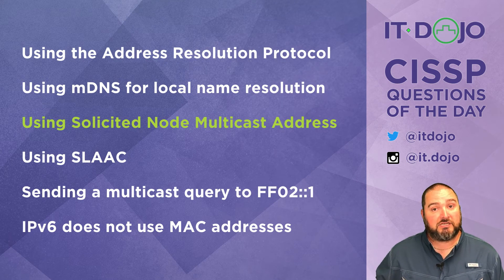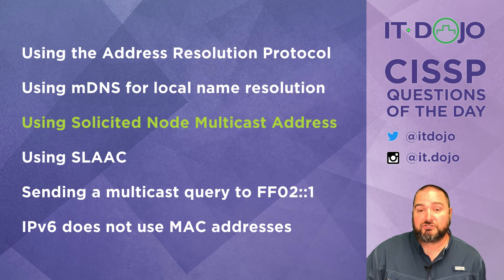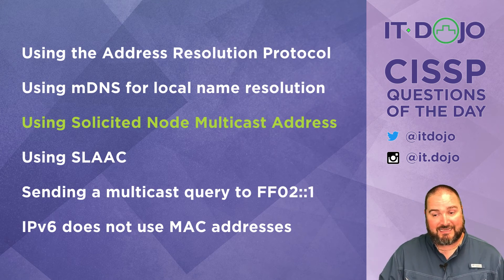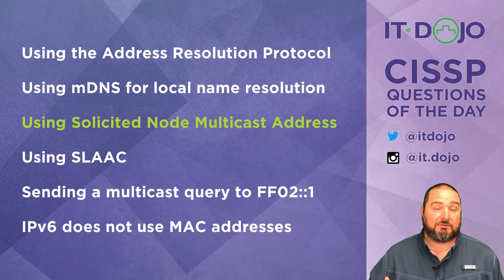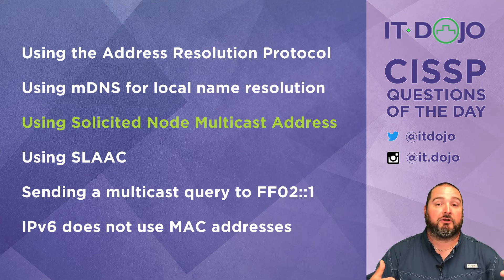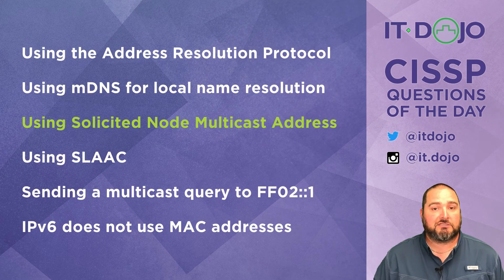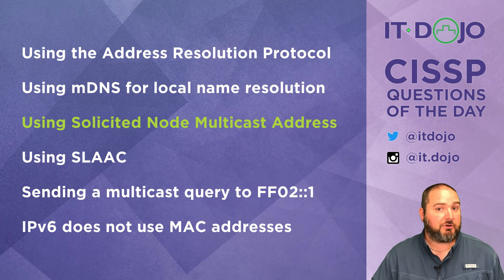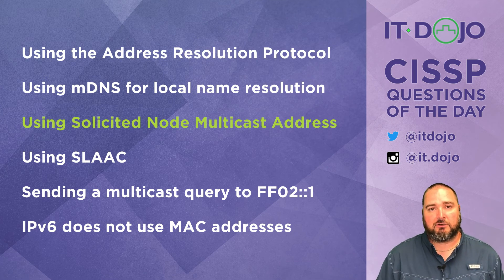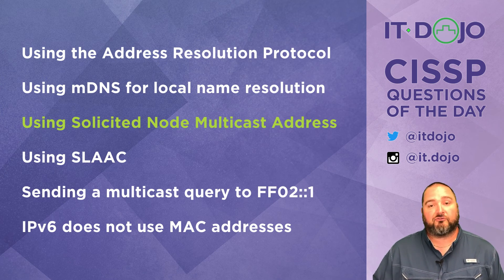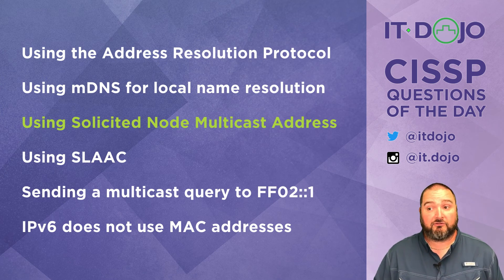Another wrong answer: sending to FF02::1, the all-nodes multicast on a local network segment — as close as you get to a broadcast in IPv6, since broadcasts technically don't exist in IPv6 anymore. But that's not the address we use to resolve IP addresses to MAC addresses — we solicit a particular node, not every node, which is one of the efficiency improvements of IPv6 over IPv4.